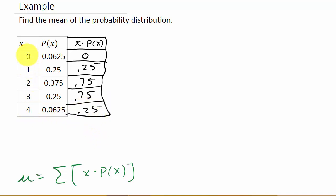So all I did is I multiplied the x times p of x, for each one. And now we just sum this column up. We just add it up. So when we sum this column up, we get 2 as an answer. So we can say that the mean of this probability distribution is 2. And this is your answer.